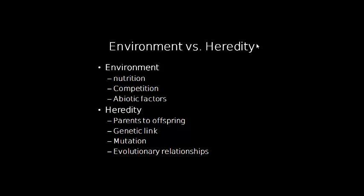It's important to discuss and differentiate variation in species due to environment versus heredity. Environmental variation is not due to any genetic difference, but is influenced by access to nutrition. If we look at children in Africa compared to children in the Western world, we can see the effects of nutrition — skinny limbs, a pot belly due to lack of food, and if they survive, sometimes they're skinnier and don't reach their full height. There's also competition for resources, and abiotic factors such as availability of water and sunshine, especially in plants.